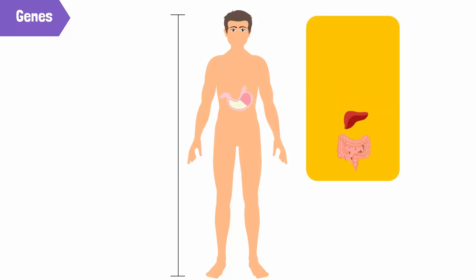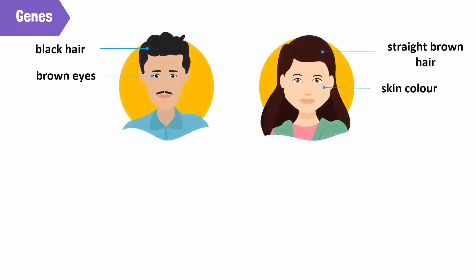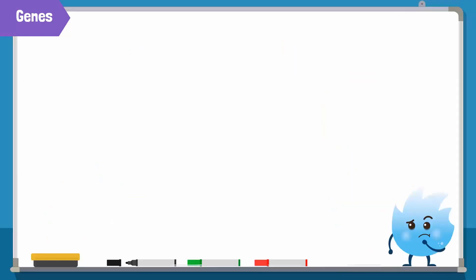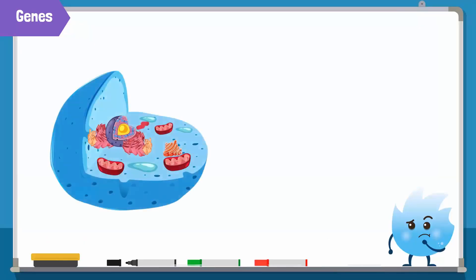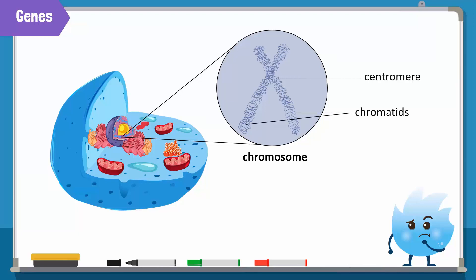Not only that, but the number of your fingers and toes, your organs — pretty much everything is coded in your genes. Genes hold the instructions to pass down all these characteristics or traits from parents to their offspring. These genes are located on long thread-like structures called chromosomes. One chromosome is made up of two similar strands called chromatids, which are attached at a point called the centromere.